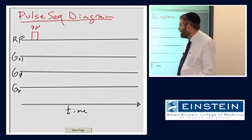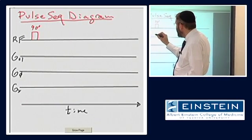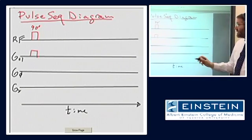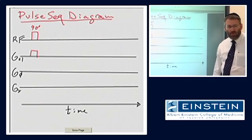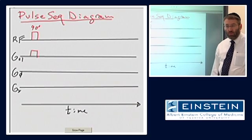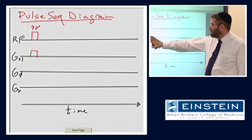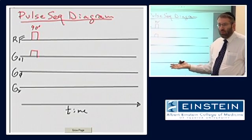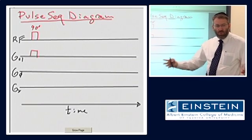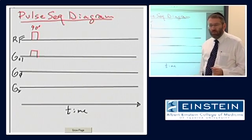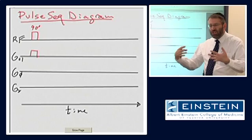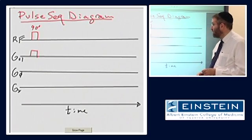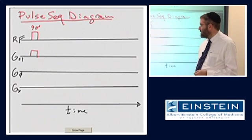And we've said already that the slice select gradient must be on at the time that we transmit that RF in order to select the slice. In the absence of this slice select gradient, what do we do? We excite the spins throughout the entire patient, sample, whatever it happens to be, whatever is in reach of the RF coil that's generating our radio frequency pulse. So at this point, we've selected a slice.